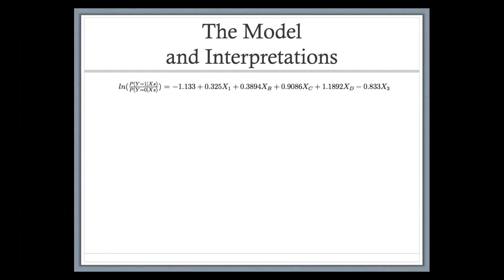Now let's talk about the interpretation of each coefficient in the model. The intercept tells us the log odds of using contraceptives when all x variables equal zero — meaning someone with low education in age category a who does not want more children.